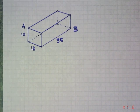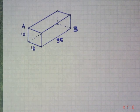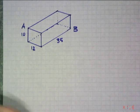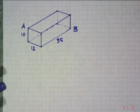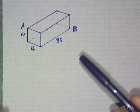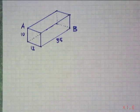Today, we are going to be talking about the space diagonal. Basically, what a space diagonal is is the longest segment that you could fit in a 3D space, or you could think of it as a rectangular prism. In this case, I have a rectangular prism with dimensions 10, 12, and 35, and I want to go from A to B, which would represent the longest diagonal that would fit in here.